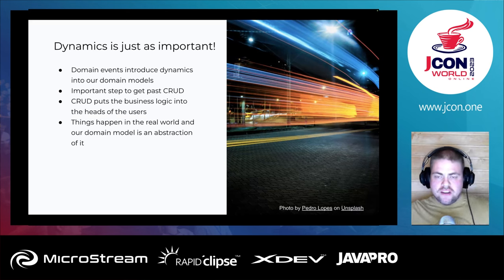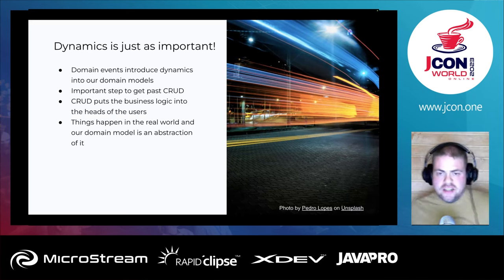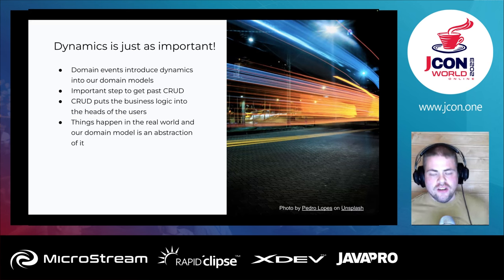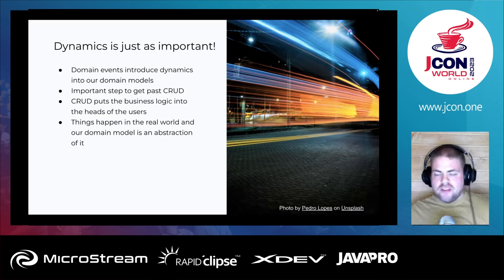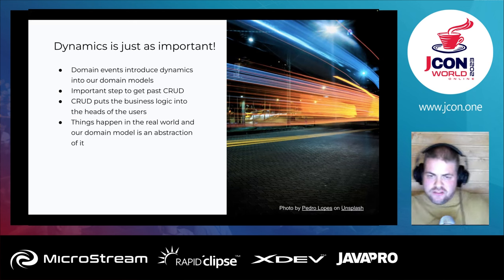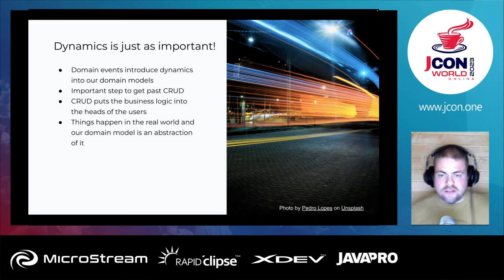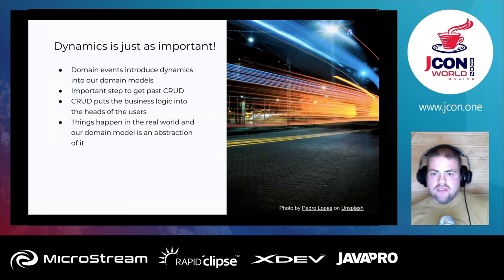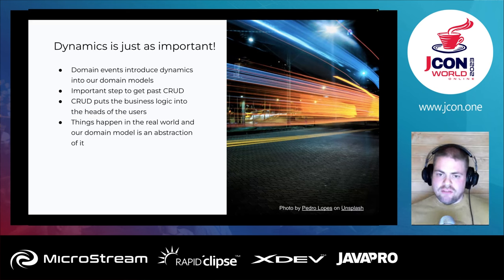This is an important step to get past the CRUD way of thinking — where CRUD is create, retrieve, update, delete. The problem with CRUD is that it puts the business logic into the heads of the users. CRUD is only about creating, retrieving, and updating data — it says nothing about why you're creating the data, what caused you to update it, or what happens after you delete it. All that is inside the heads of the users. Domain models are an abstraction of the real world, and in the real world things happen all the time. We need to deal with those events in our domain model too, and what helps us deal with them is the business logic.